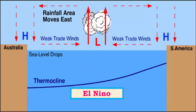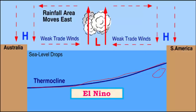During El Niño the thermocline is not in its normal position. Under normal conditions there is a sloping thermocline with upwelling on the eastern side. Under El Niño conditions, the thermocline levels fall — upwelling of cold water stops near South America, and that region remains covered by a layer of warm water.